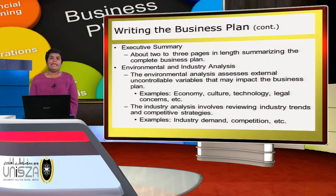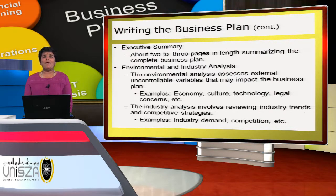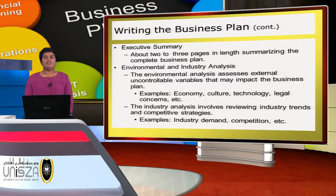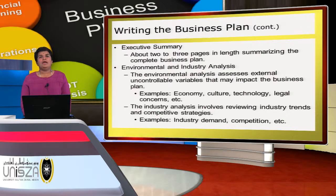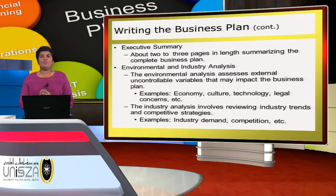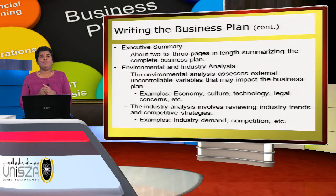For example, in the agriculture sector, the current trend is that people are demanding organic produce because they are concerned about their health. There is a big gap in organic farming. As an entrepreneur — especially an agricultural entrepreneur — you should grab this opportunity and produce organic produce because demand is getting higher and higher.